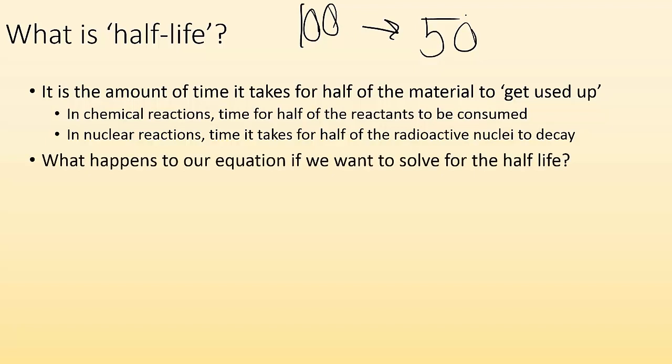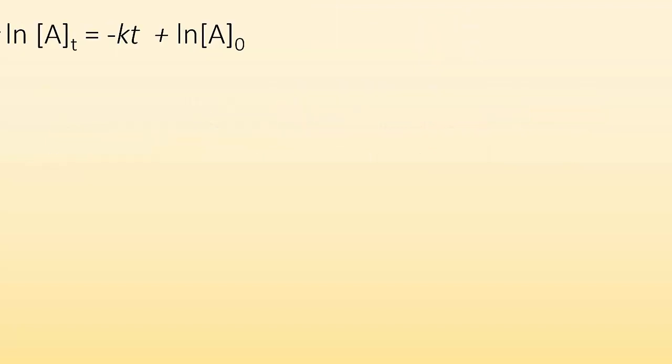So what happens to our equation if we want to solve for half-life? Well, let's take a look. I got ln of At equals negative Kt plus ln of A0. Well, if I just pick percentages like 100 or something, I know I'm going to end up with half of it. So I end up with half of my starting amount, which would be 1 over here. And my T is going to be T1/2, which just means half-life.